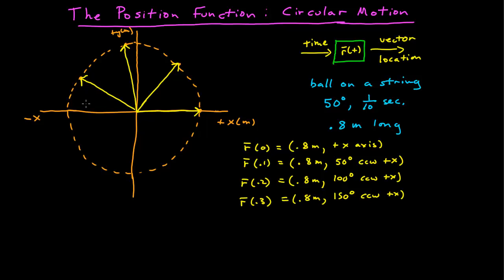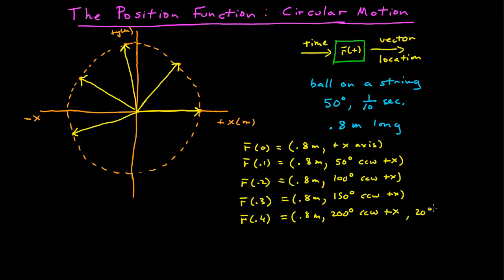Another tenth of a second and we're over here. The yellow vector corresponding to that position looks like that. We might say it has a length of 0.8 meters and is 200 degrees counterclockwise from positive x — or 20 degrees counterclockwise from negative x. We can write it either way.